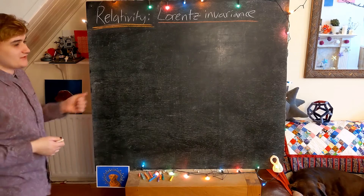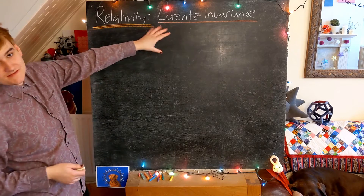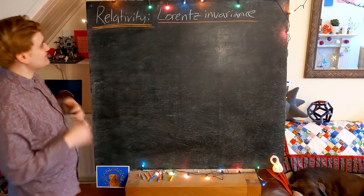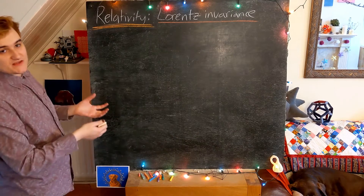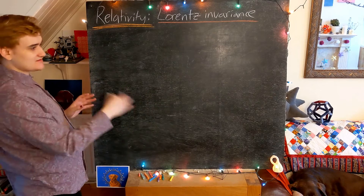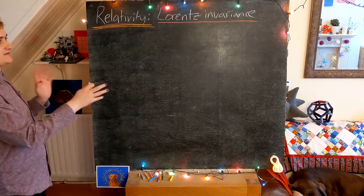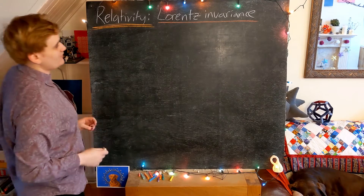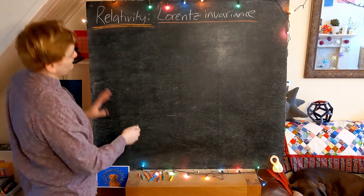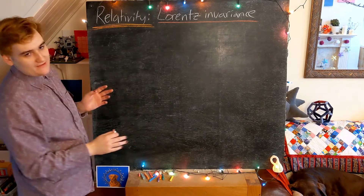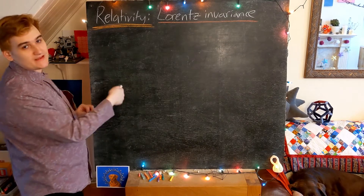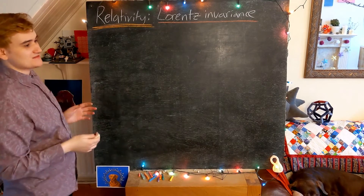I started to introduce this notion of Lorentz or coordinate invariance in the last video by essentially discussing how spacetime, being a manifold, we can construct any set of coordinates on that manifold or any reference frame to view that manifold. Any reference frame is going to be completely valid and we're just going to have some non-trivial way to transform between the sets of coordinates.